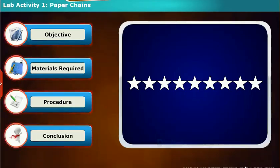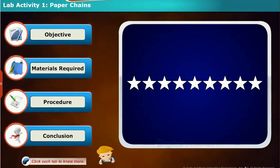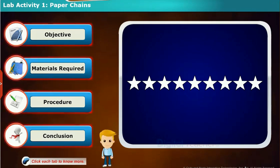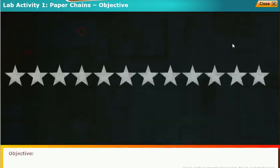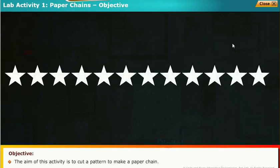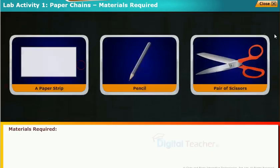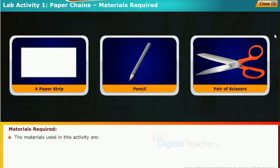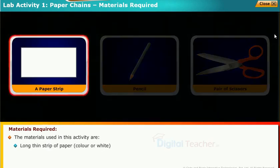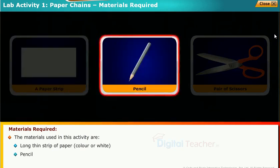Let us perform a lab activity on cutting in patterns. Click each tab to know more. Objective: the aim of this activity is to cut a pattern to make a paper chain. Materials required are long thin strip of paper, color or white, pencil, and pair of scissors.